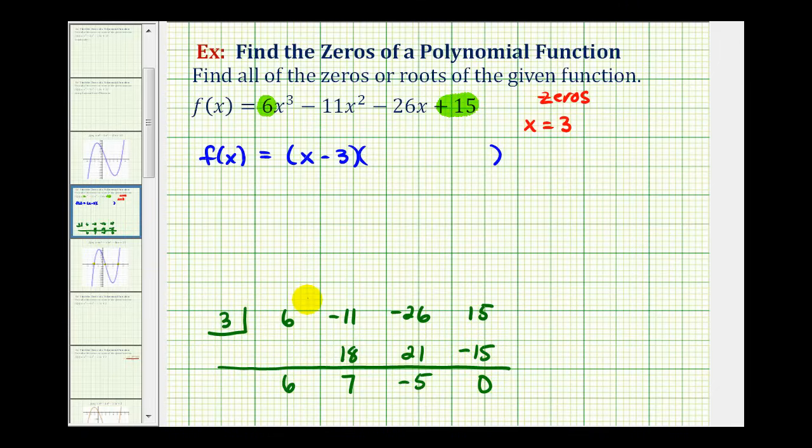But this also tells us that this quadratic factor is represented by these coefficients here. Again, we know it has to be a degree two factor. So the other factor would be 6x² + 7x - 5. And again, we're trying to find the x values that make this equal to zero. We already have the 3 from this factor. Now we want to find the zeros of this quadratic factor.